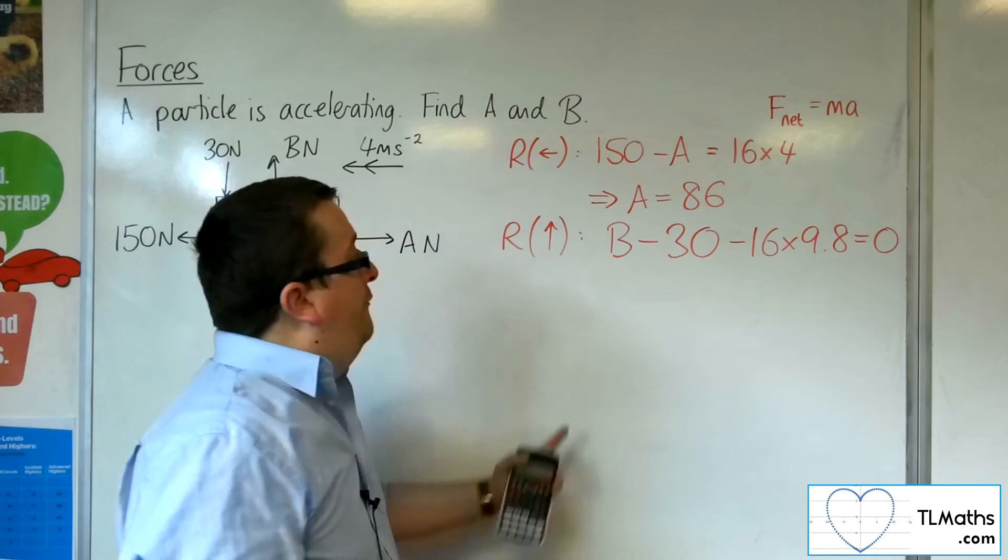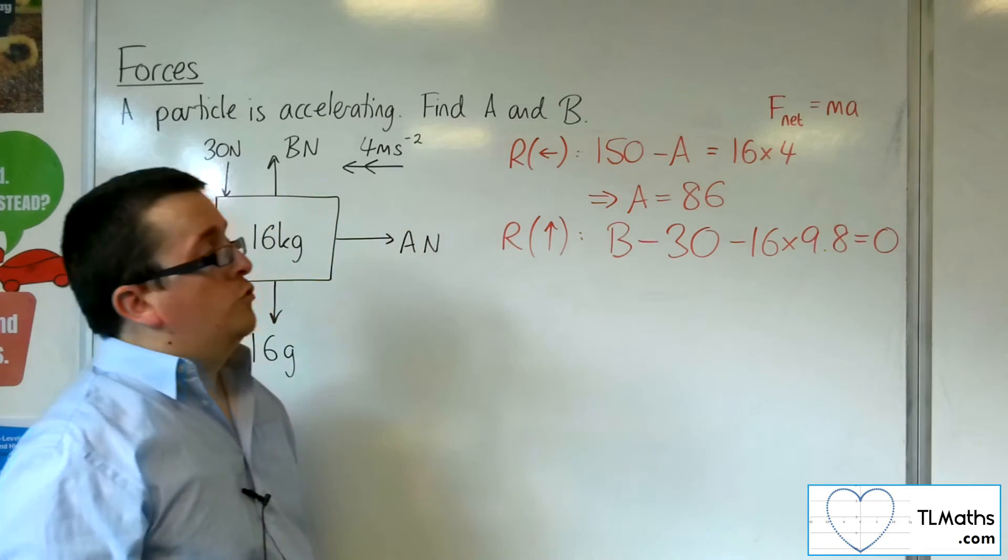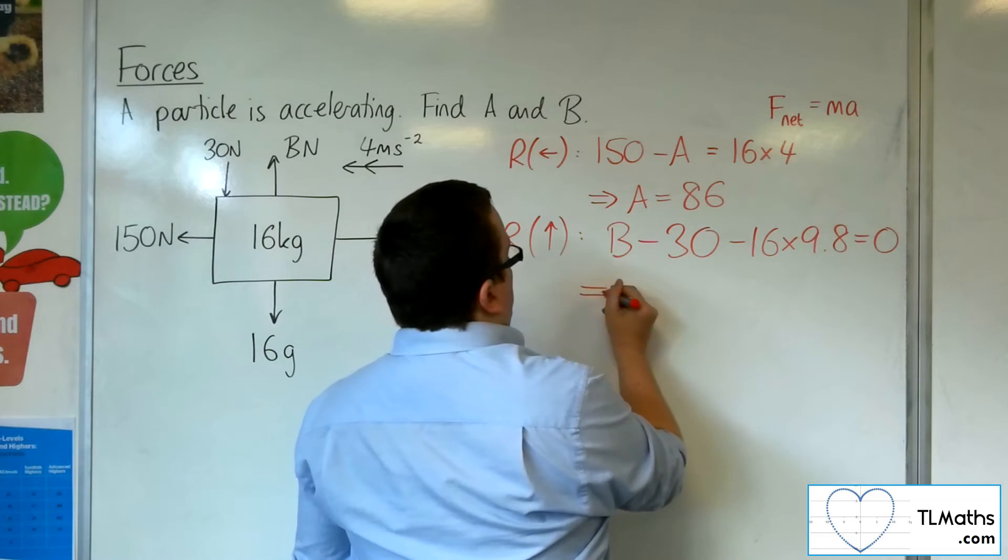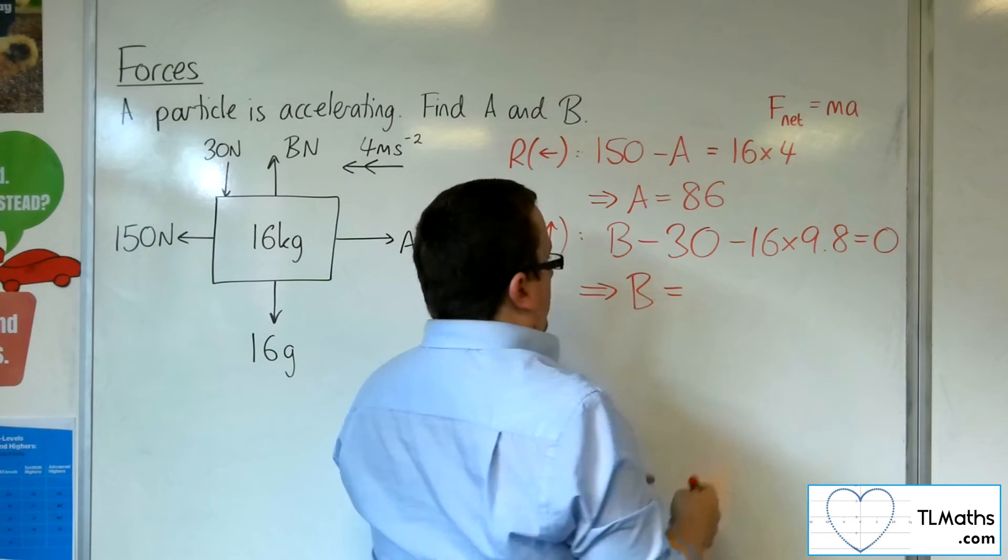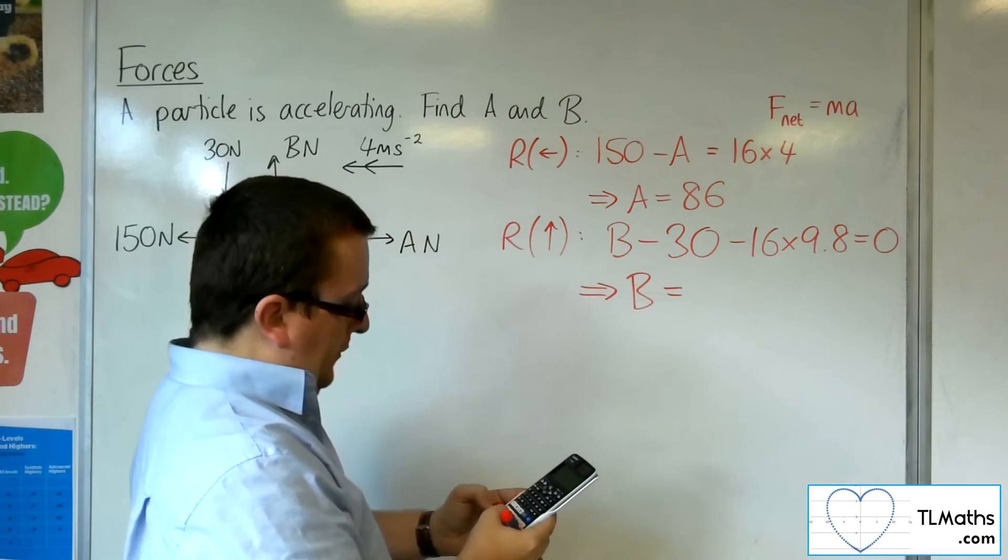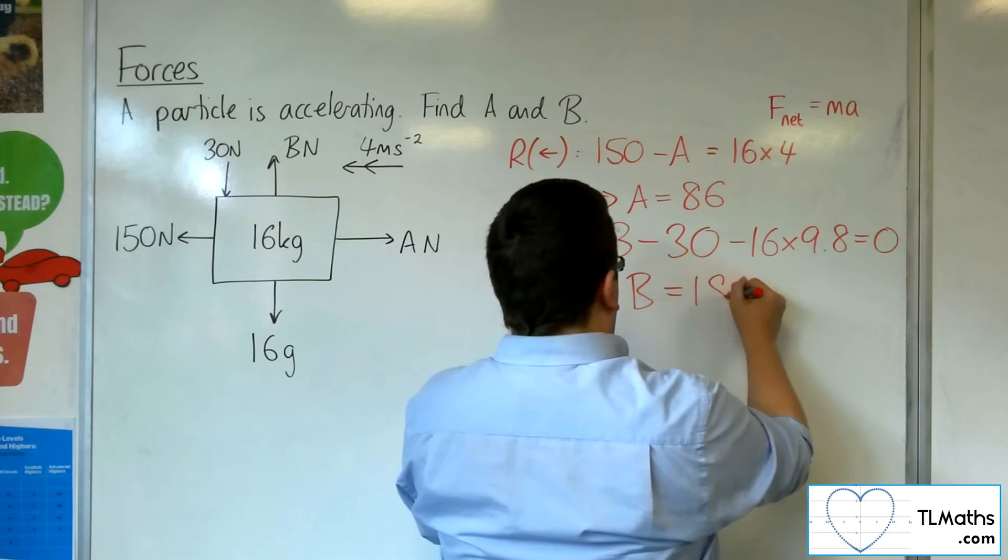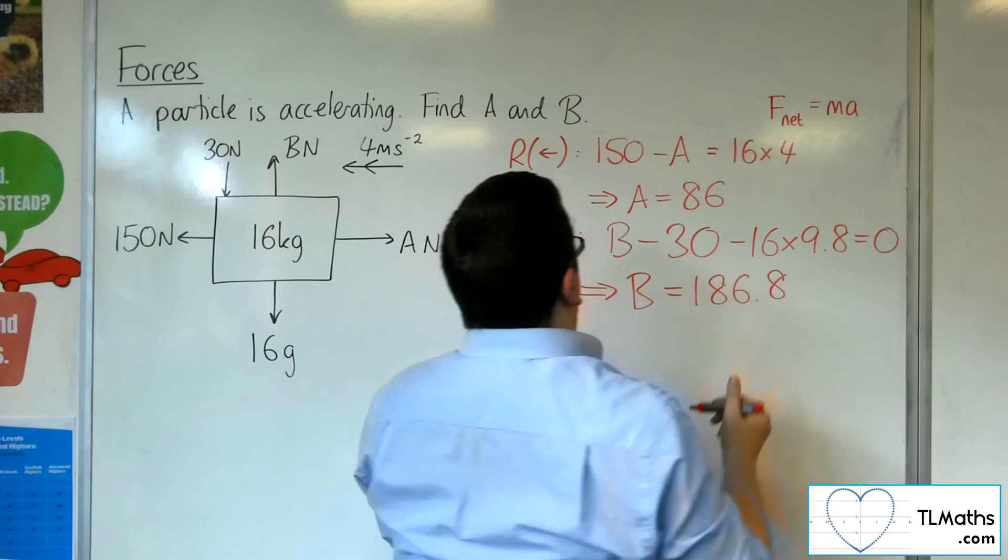And, that's the net force, the acceleration in the vertical direction is 0, so this is equal to 0. So, B is going to be 30 plus 16 lots of 9.8, which is 186.8.